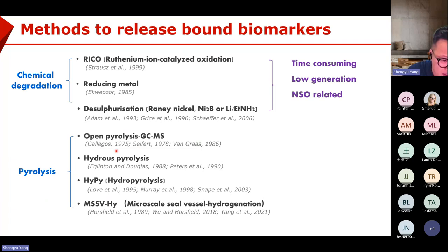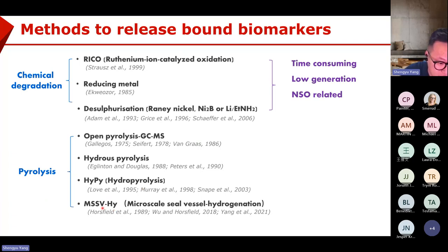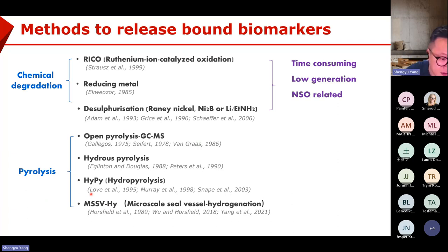More often we use pyrolytic methods. In the early days, people used open pyrolysis or hydropyrolysis, but the efficiency was also very low. Some of you might have heard about HyPy hydropyrolysis. We are working on the MSO-3 hydrogenation method. MSO-3 was invented by Horsfield in 1989, and in recent years we developed the MSO-3 hydrogenation method to release biomarkers. Let's focus on these two most effective methods.